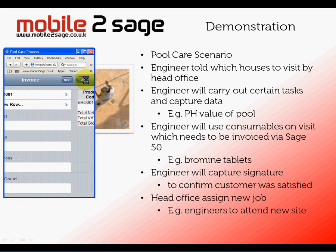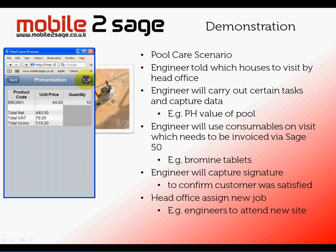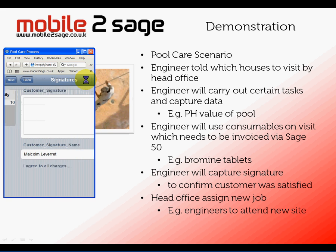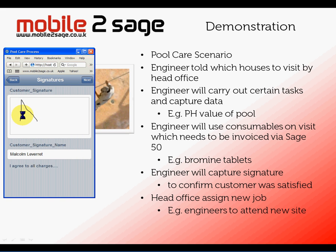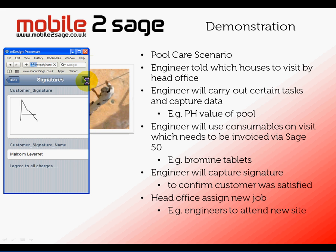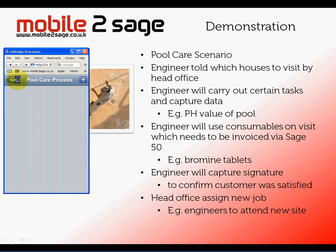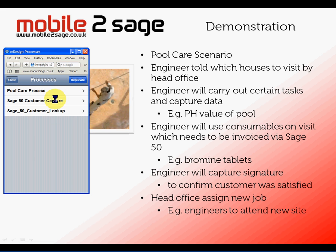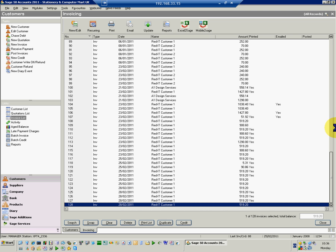And there it is — it's £519.20, made up of net, VAT and gross as shown on the screen. Again all of these screens are definable. I can now just get the customer to sign the screen to say that they're happy with the service, and that signifies the job is now completed and can be sent back up to the head office for invoicing. I'll just click Replicate and that's it — the job is done, and I can now go off to the remote system which has got my Sage system on it.